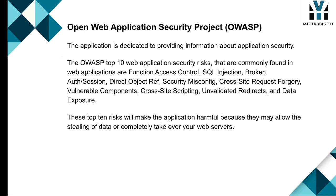The Open Web Application Security Project is dedicated to providing information about application security. The OWASP Top 10 web application security risks commonly found in web applications are: broken function access control, SQL injection, broken authority session, direct object reference, security misconfiguration, cross-site request forgery, vulnerable components, cross-site scripting, unvalidated redirects, and data exposure. These top 10 risks can make an application harmful because they may allow the stealing of data or completely take over your web servers.